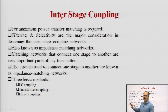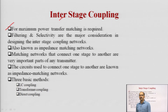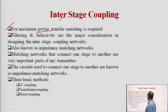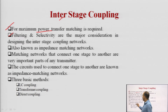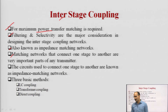The main point for maximum power transfer is that matching is required. When impedance is properly matched, the complete power is delivered to the output, meaning maximum power will be delivered. Second, filtering and selectivity are the major considerations in designing the interstage coupling network — filtering determines which signal is selected and which is desired, so all unwanted noise signals have to be filtered. These are also known as impedance matching networks that connect one stage to another, and they are a very important part of any transmitter or receiver because the antenna is connected through them.